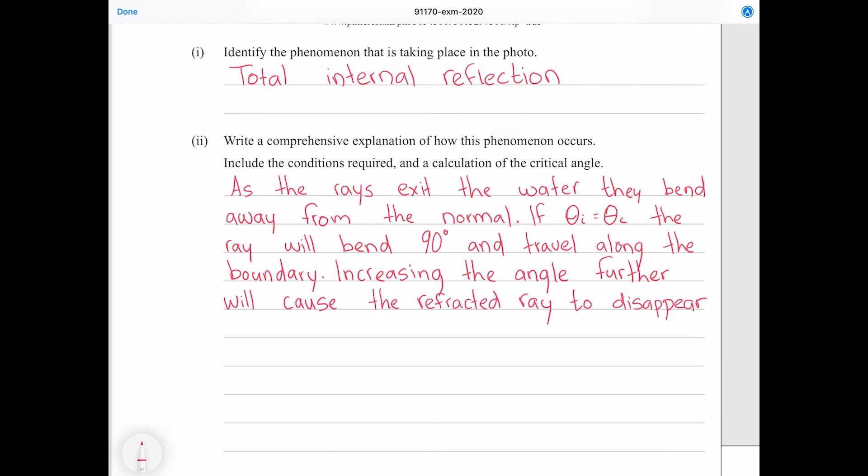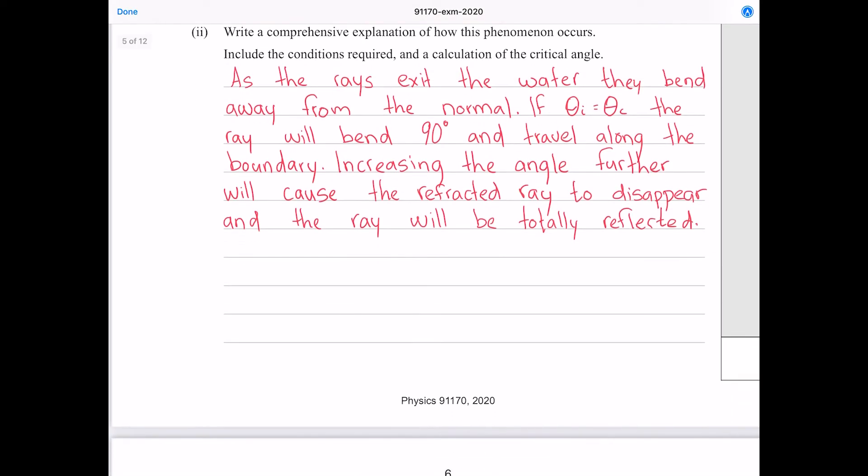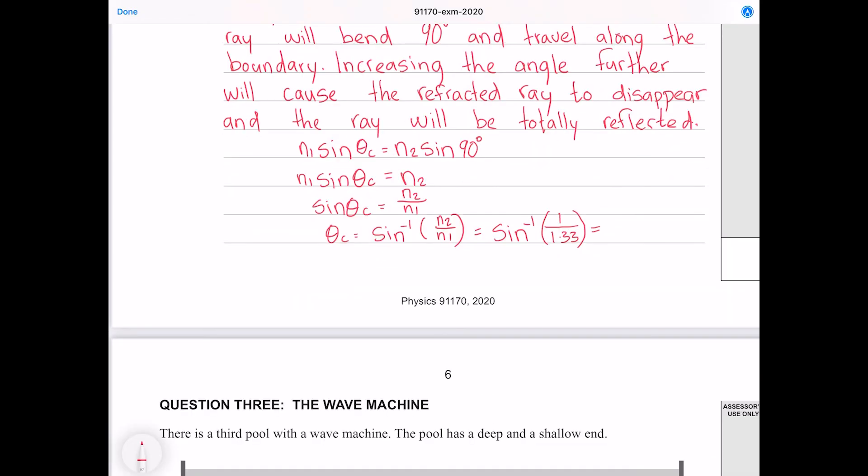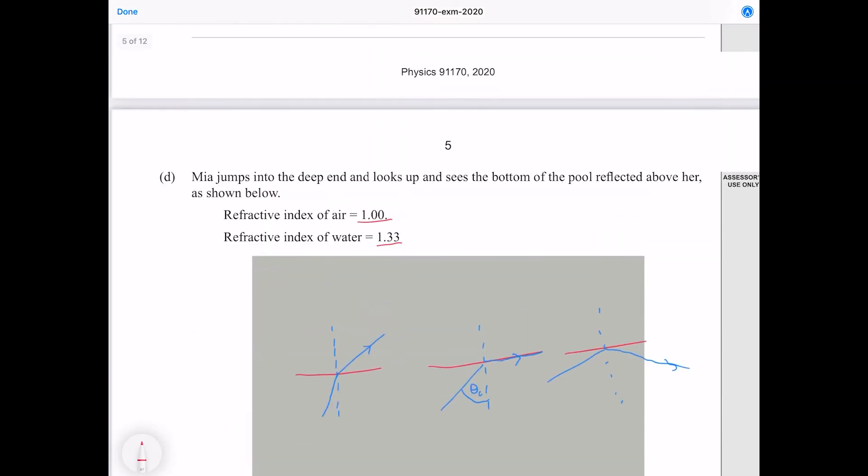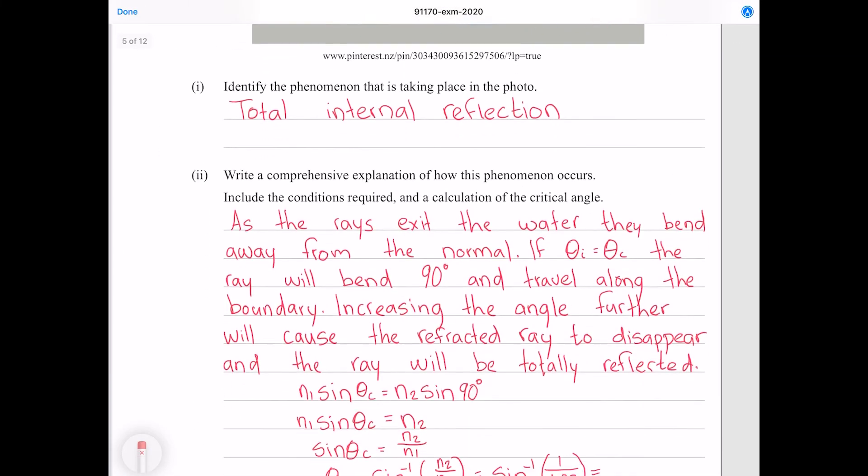So let's now find our critical angle. So for that we're going to use Snell's law where our first angle is our critical angle and our second angle is going to be 90 degrees. Now since sine of 90 is 1, that just becomes n2. Dividing both sides by n1, and now taking the inverse sine of both sides. Putting our numbers in, which gives me 48.75.